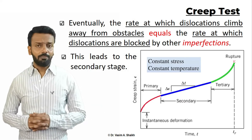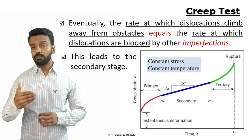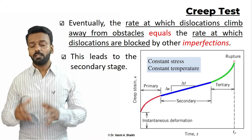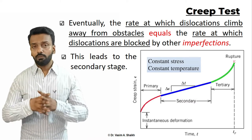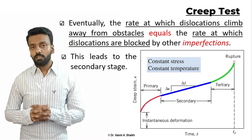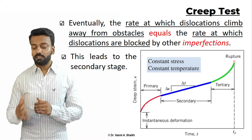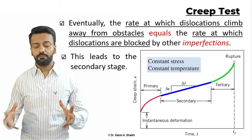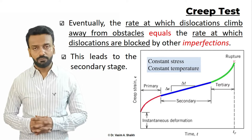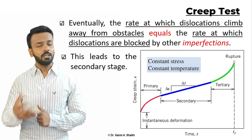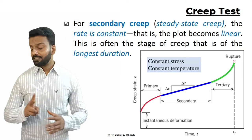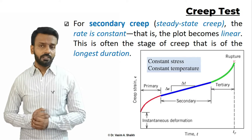Eventually, the rate of dislocations that are moving will equal the rate of dislocations being blocked by different types of imperfections. This gives rise to the second stage of creep.